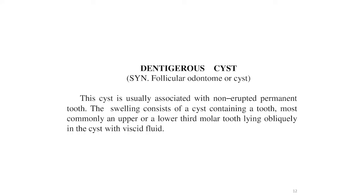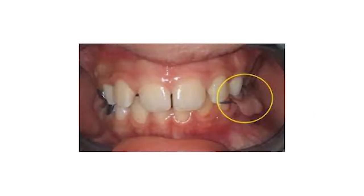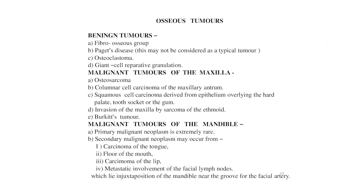The dentigerous cyst, also called follicular odontome or cyst, is usually associated with a non-erupted permanent tooth. The swelling consists of a cyst containing a tooth, most commonly an upper or lower third molar tooth, lying obliquely in the cyst with fluid. A clear picture showing the dentigerous cyst is shown on screen.